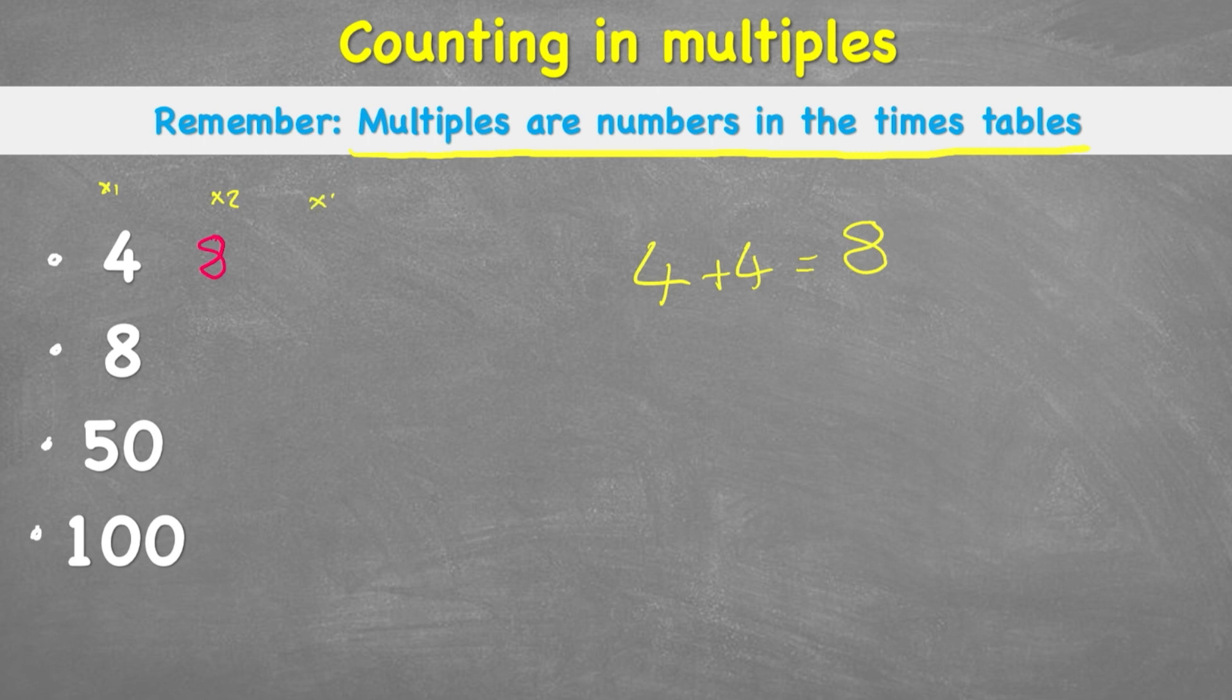Well all we're doing essentially is 4 plus 4. And 4 plus 4 equals 8. So the next number in our multiples would be 8. 4 times 2 is 8. And if we're timesing it by 3, all I need to do now is 4 plus 4 plus 4, which is 4, 8, 12. So I have an answer of 12. So therefore my next multiple would be 12.